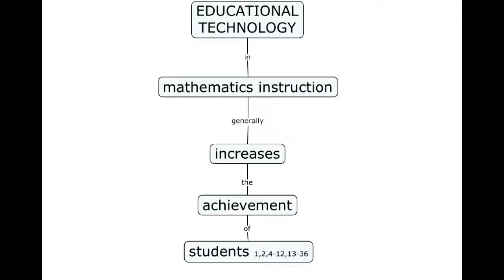In analyzing the literature, the major theme that emerged was that the use of educational technology in mathematics instruction generally produces an increase in student achievement. When a computer-based tutoring software was implemented in traditional math instruction, there was an improvement in student achievement. Students who engaged in the computer-based tutoring software attained mastery of concepts. The program was also able to meet the diverse needs of students in the study while increasing student achievement.